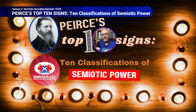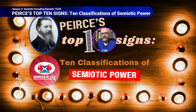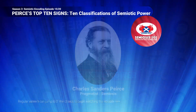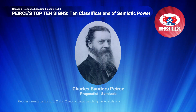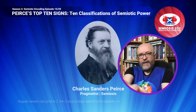Peirce defines, in his wonderfully conceptually detailed but obtuse way, 10 classifications of semiotic signs. Welcome to episode 15, season 3 of Semiosis 101, where we explain Charles Sanders Peirce's semiotic theory of signs in designer-centric terms.